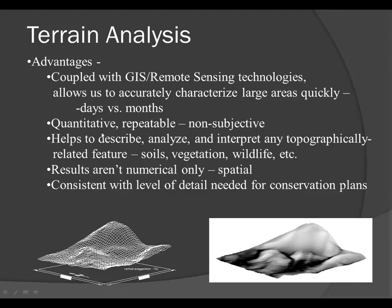Another advantage of terrain modeling is that it's very repeatable — we're able to create this model, cover large areas, and repeat the process whether we're describing soils, vegetation, water, and so on, analyzing different scenarios. And our results aren't just numbers — they're spatial. It's the soil erosion or water flow at a particular location, and it can be done at various scales to support our conservation planning processes.